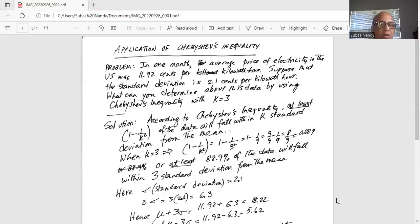we have 1 minus 1 over k square equals 1 minus 1 divided by 3 square, which is 1 minus 1 over 9, or the 1 can be written as 9 over 9 minus 1 over 9, which is 8 over 9 or 0.889. So at least 88.9 percent of the data will fall within 3 standard deviations from the mean.